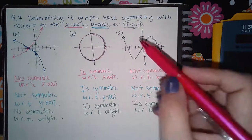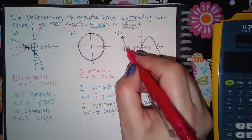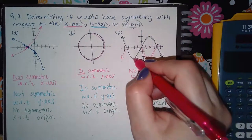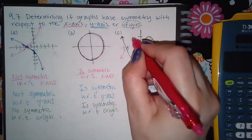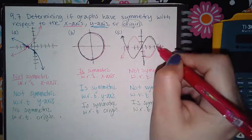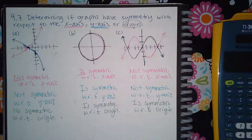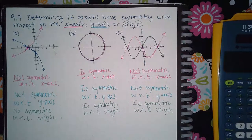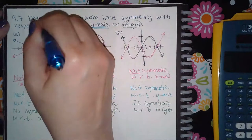Now for part C: I take what is on top and flip it downward, and take what is on the bottom and flip it upward. Does the pink graph — the one I drew or visualized — land on top of the original graph? No it does not, so this one is not symmetric with respect to the x-axis.